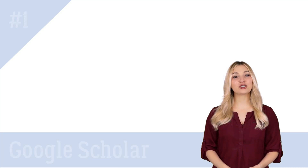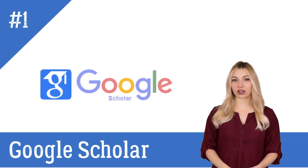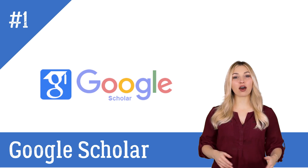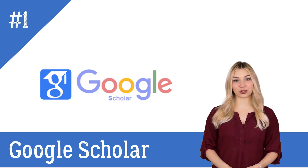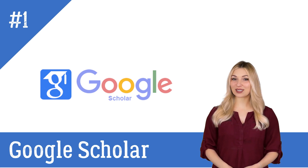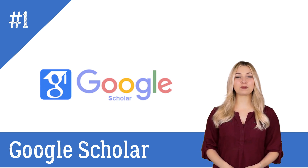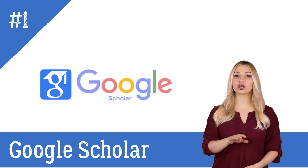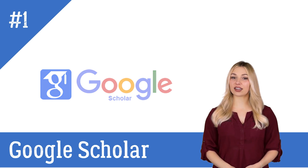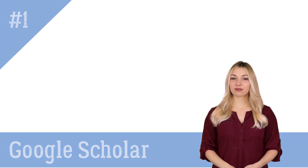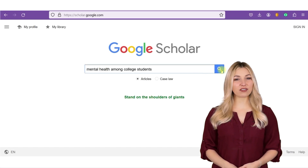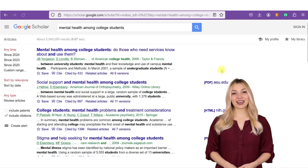The first tool on the list is Google Scholar. Google Scholar is a free online research tool that has been specifically designed for searching academic literature. When you search for a topic in Google Scholar, it brings up relevant articles.